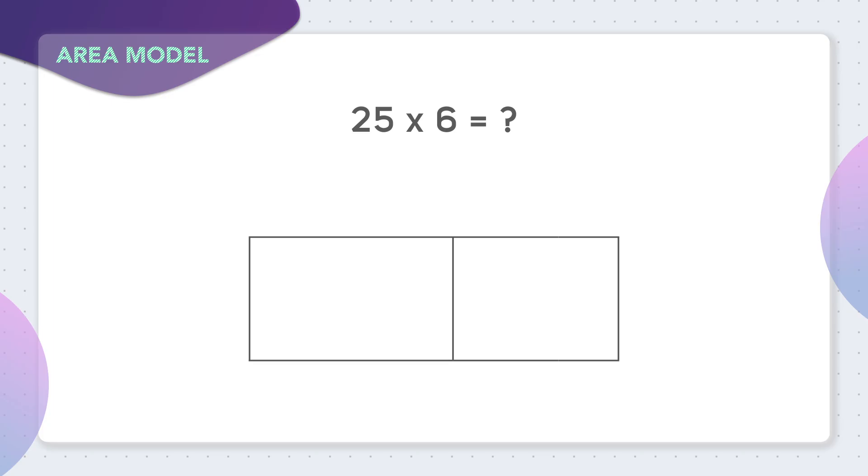Now the first step is to split up the number 25 into pieces so that it is easier to multiply. We can first look at this 2, which I know represents two tens, and therefore it has a value of 20. Next we can look at this 5, which represents five ones, or just a value of 5.